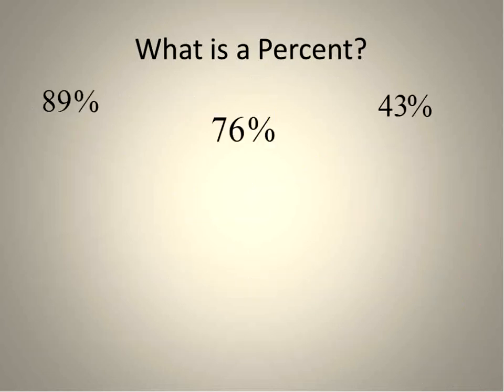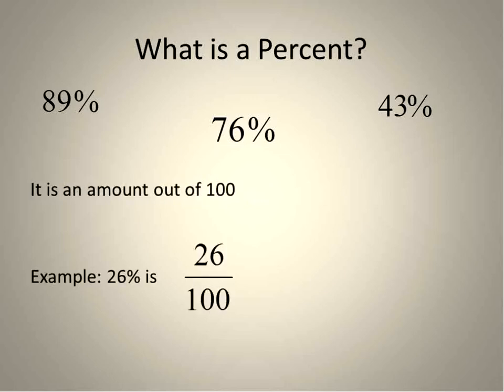Percent can be written like this: 89%, 76%, or 43%, and it means an amount out of 100. So, for example, 26% is 26 out of 100, which can be written, amazingly enough, as a fraction—26 parts out of 100.